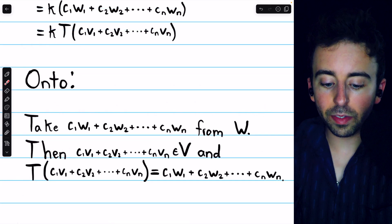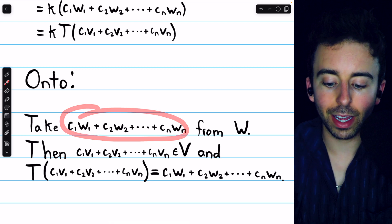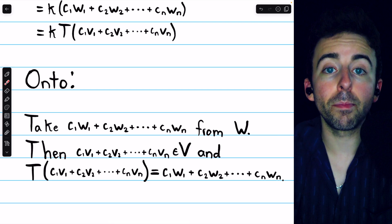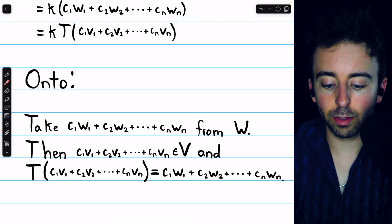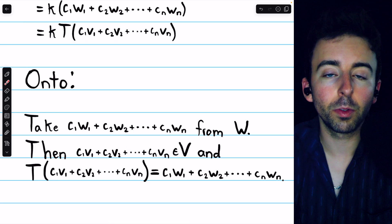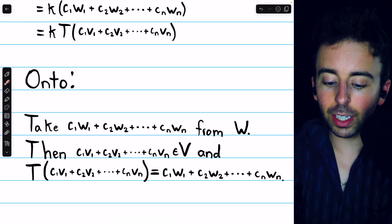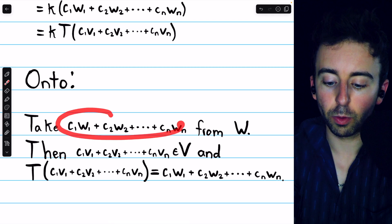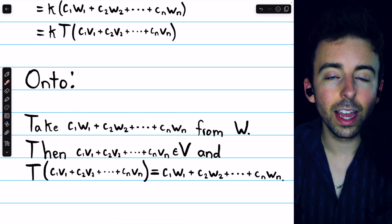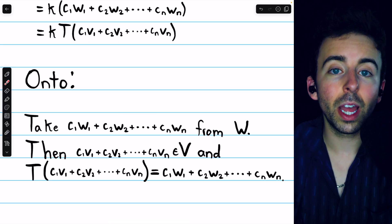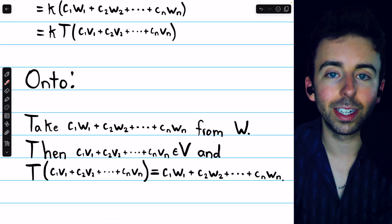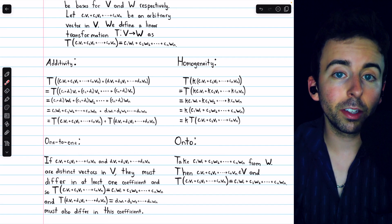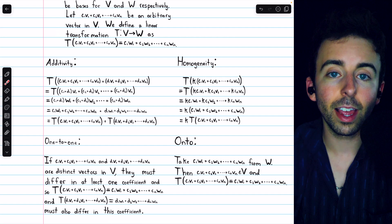To prove that it's onto, we take an arbitrary vector from the codomain W and show there's some vector in the domain which maps to it. Indeed there is — it's a linear combination of basis vectors in W, so that same linear combination of the basis vectors in V will map to this vector in W under T. So it is onto, and hence in total it's an isomorphism from V to W. That establishes that if V and W have the same finite dimension, they must be isomorphic vector spaces. So two finite-dimensional vector spaces have the same dimension if and only if they're isomorphic.